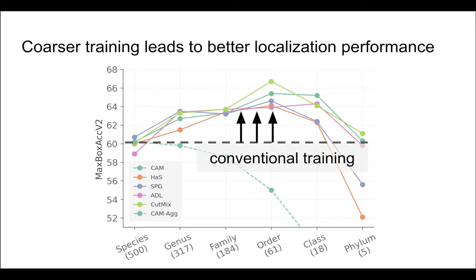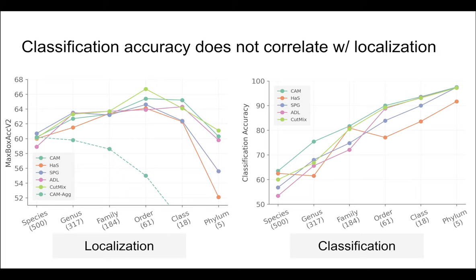Interestingly, localization performance suffers if the labels are either too fine or too coarse. On the other hand, classification performance consistently increases as the labels become more coarse. A good classifier can be a bad object localizer.